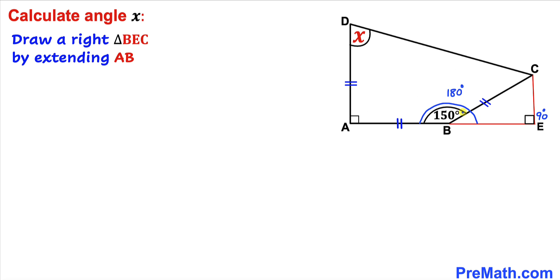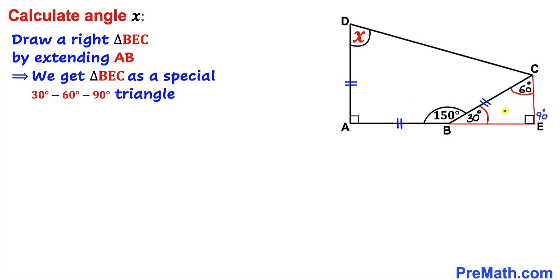We know the straight angle is 180 degrees and angle ABC is 150 degrees, so angle ABE has to be 180 minus 150, which is 30 degrees. Since the interior angles of any triangle sum to 180 degrees, if one angle is 30 degrees and another is 90 degrees, the third angle BCE must be 60 degrees.